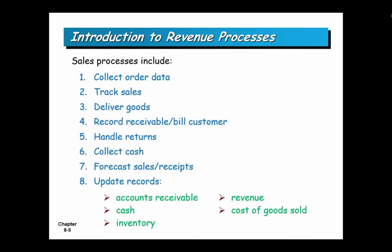The first of the three processes is the sales process. Pretty much no matter what your company is, you collect information for an order, track the sale, deliver the goods, record the receivable, and bill the customer. This is more done in the business-to-business environment. You may also have to handle returns, collect cash, use this information for future forecasts and analysis, and update database records — accounts receivable, cash, inventory, etc.